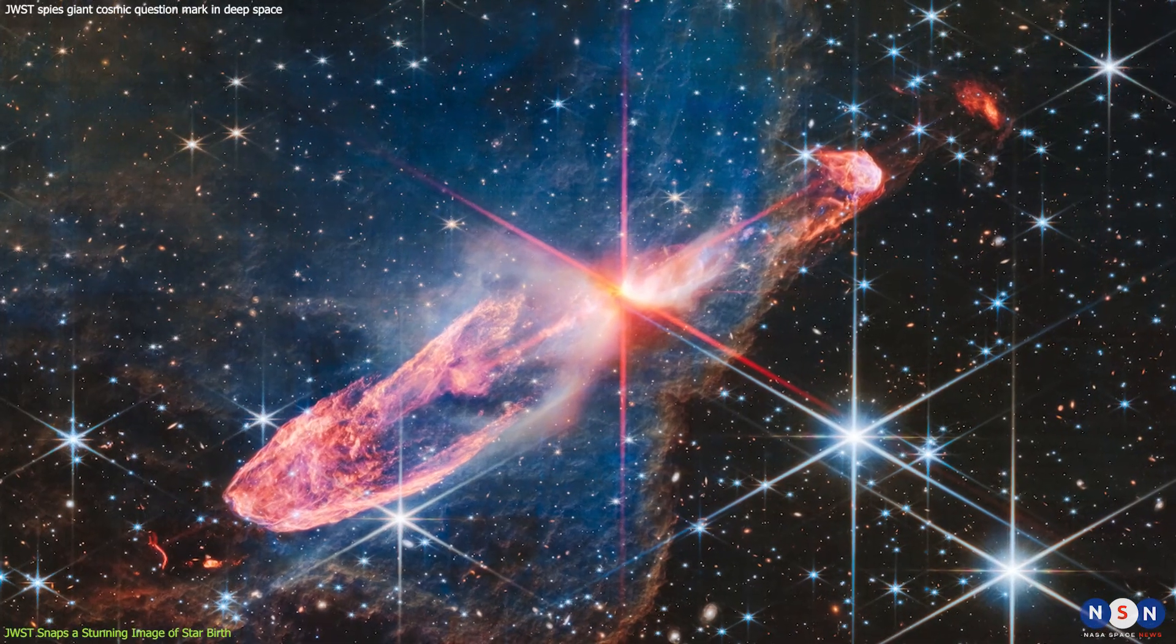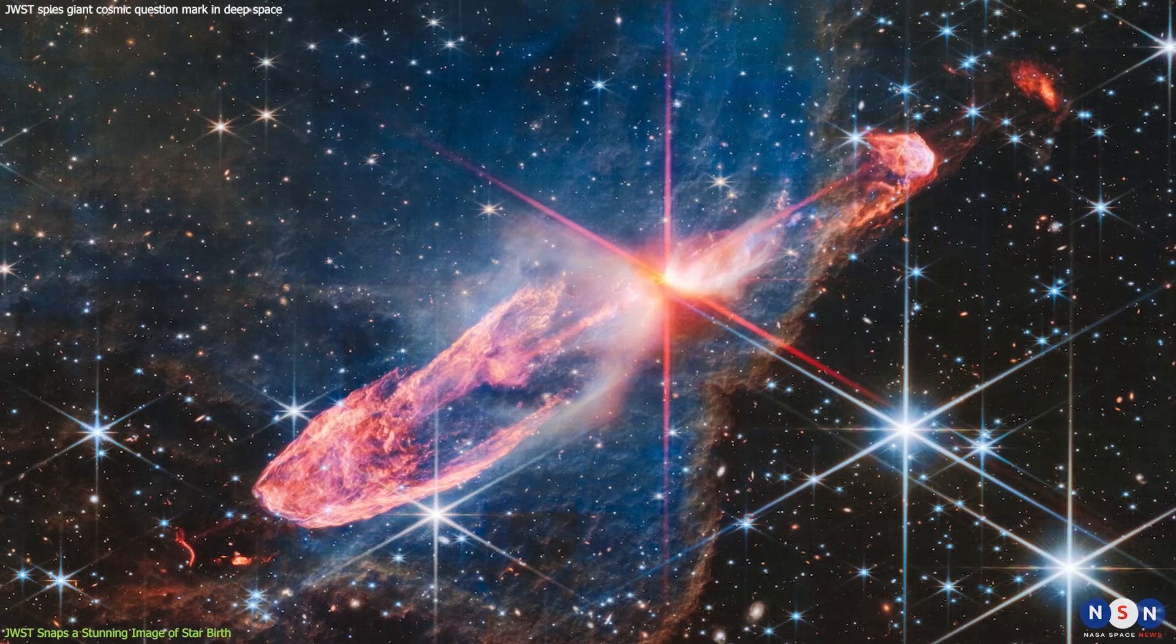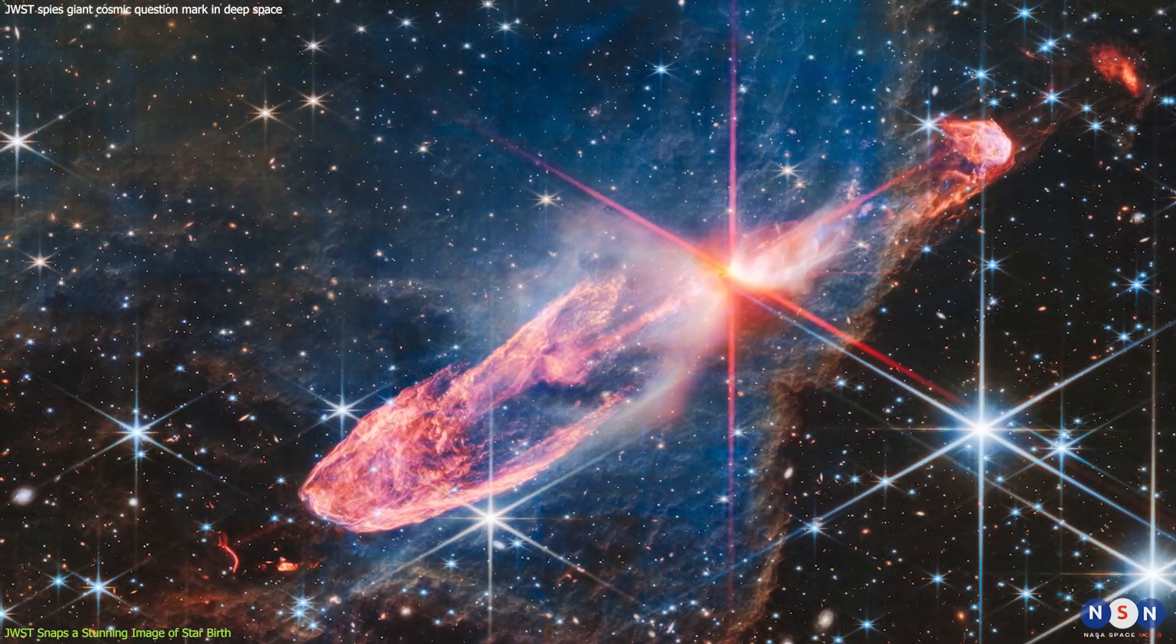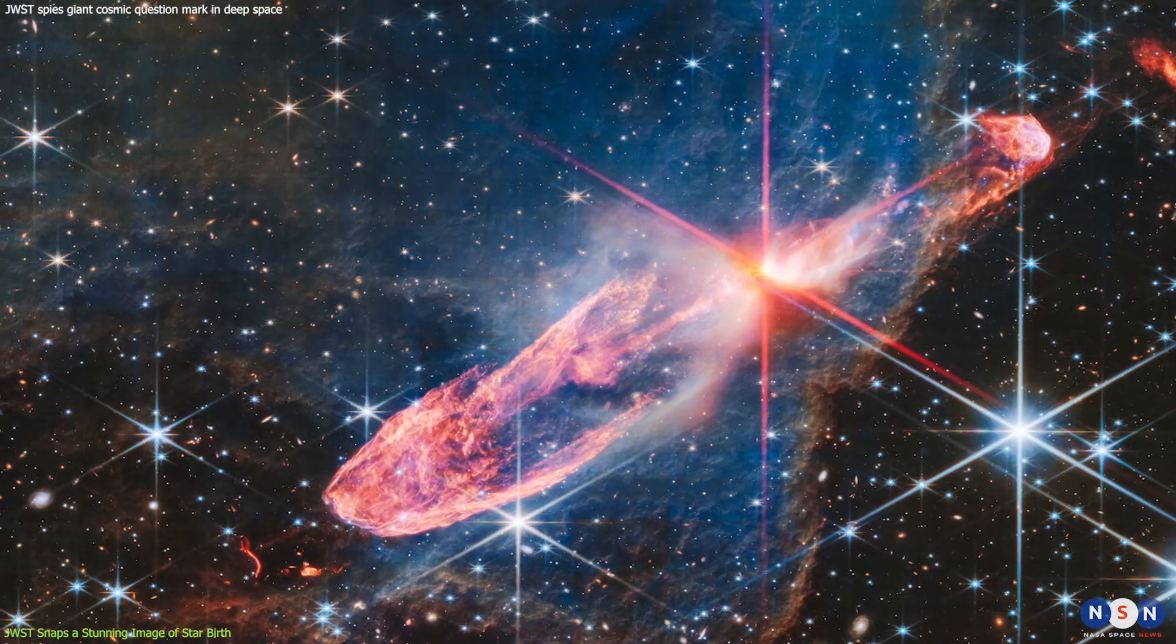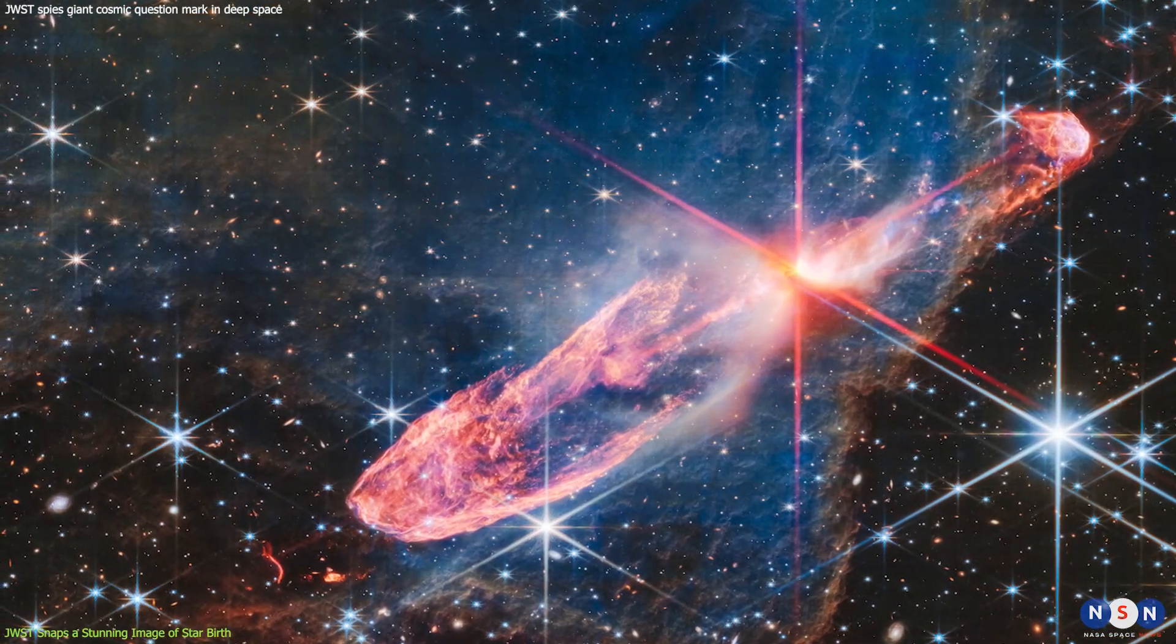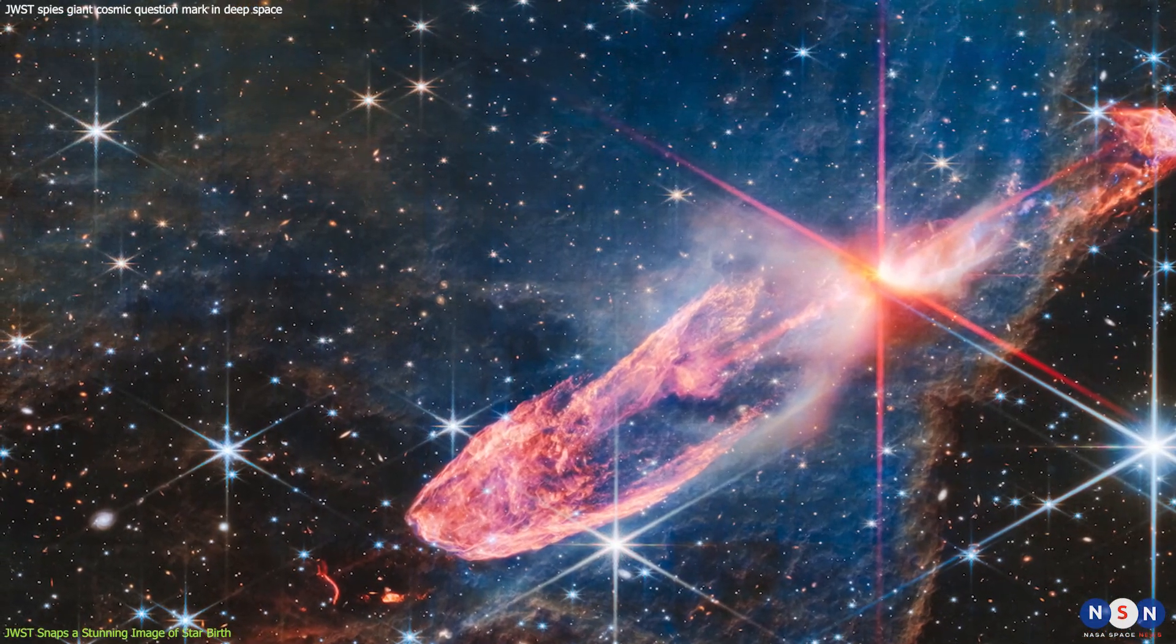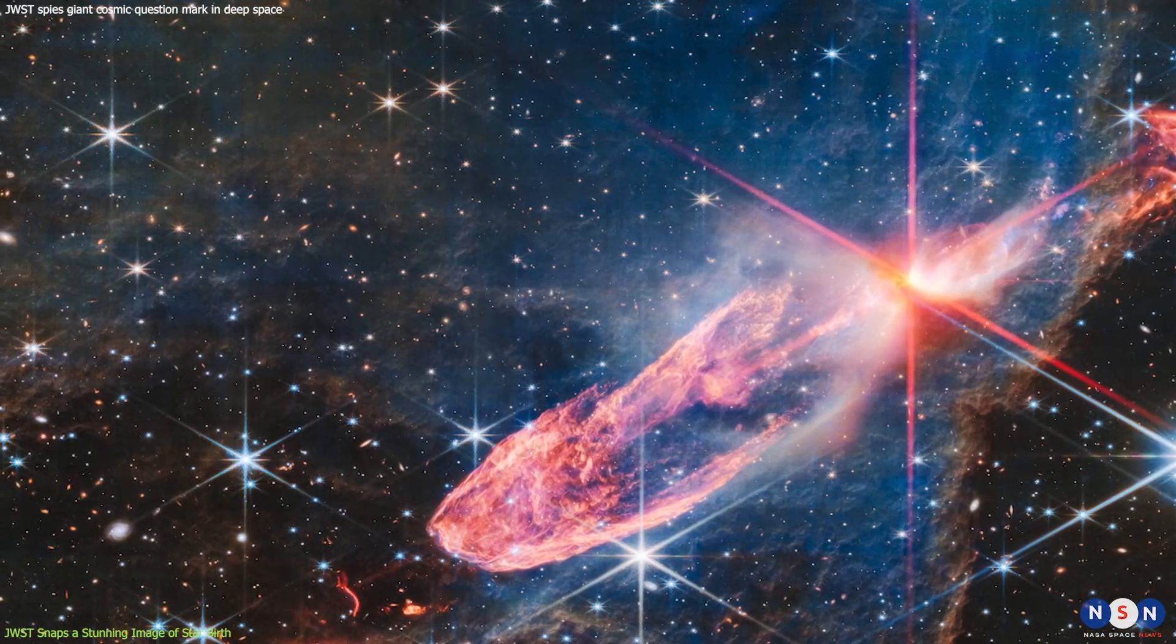The image also showcases Webb's ability to observe multiple wavelengths of infrared light simultaneously. The image is a composite of four different filters: F090W blue, F115W cyan, F150W green, and F200W red.